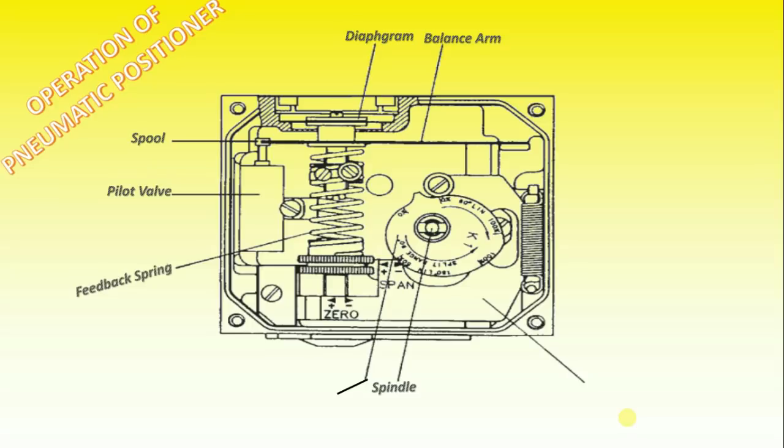The spindle and cam rotate, forcing the lower arm upwards, compressing the feedback spring. This motion will continue until the two forces are equal and the unit is in equilibrium position.